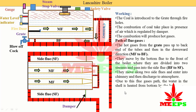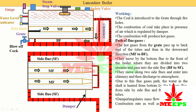The gases then move along the two side flues and enter the chimney, passing through the damper and from the chimney to the atmosphere. Due to this flue gas path, the water in the shell is heated from three sides: from the center by the fire tubes, from the bottom by the bottom flue, and from the two sides by the side flues. The damper regulates the mass flow rate of flue gases, combustion rate, and steam generation rate.